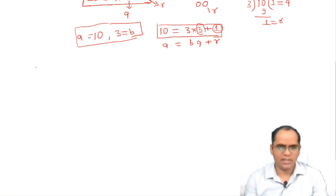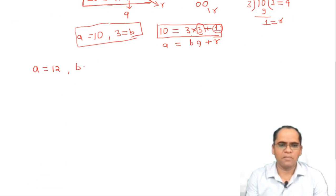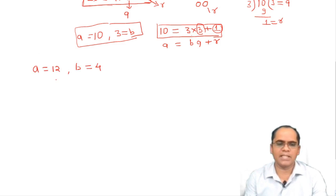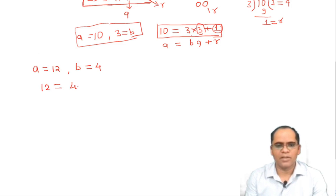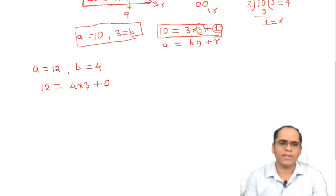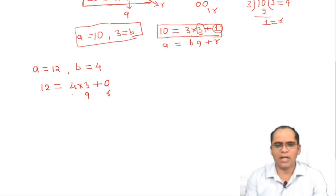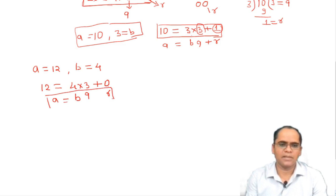Let's see one more example. Suppose a = 12 and b = 4. In this case we can write 12 as 4 × 3 + 0. Here q is the quotient 3, r = 0, b = 4, and a = 12. This is satisfying your Euclid's Division Lemma.